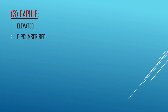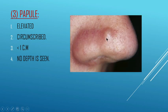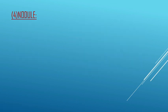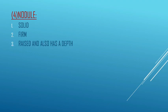Moving to the next primary lesion — the papule. A papule is elevated, circumscribed, and less than 1 centimeter. The most important characteristic is that it has no depth. As you can see in the picture, it is elevated and circumscribed, less than 1 centimeter, and you can see there is no depth.